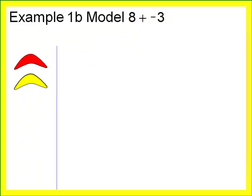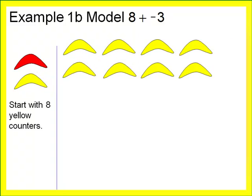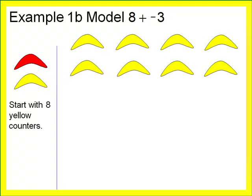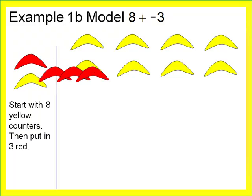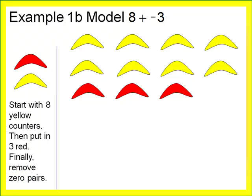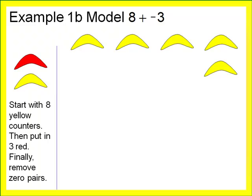For the second part of example one, we model eight plus negative three. Start with eight yellow counters to represent positive eight. Addition means to put in, so we put in three red counters for negative three. Notice that there are zero pairs in the workspace — let's remove the zero pairs. Notice that they give the same answer: eight minus three and eight plus negative three both equal positive five.